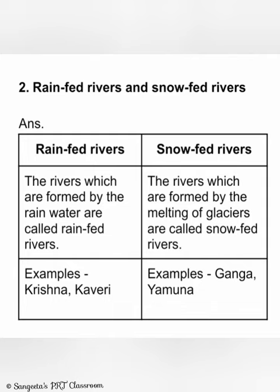Differentiate between rain-fed rivers and snow-fed rivers. Rain-fed rivers are formed by rain water, while snow-fed rivers are formed by the melting of glaciers. Examples of rain-fed rivers are Krishna and Kaveri; examples of snow-fed rivers are Ganga and Yamuna.